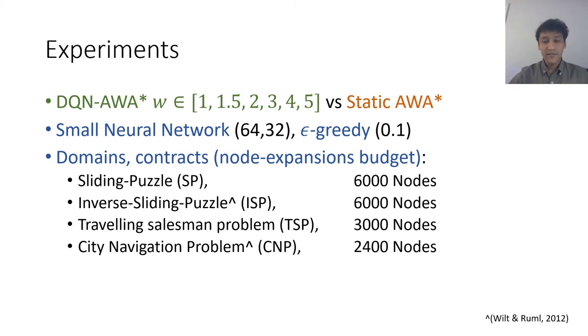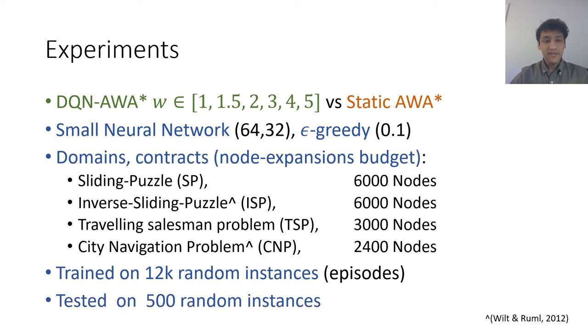We trained our approach on 12000 random instances for each of these domains and these instances had varying difficulty. Then for each of these domains, we tested each approach on 500 identical random instances of varying difficulty.